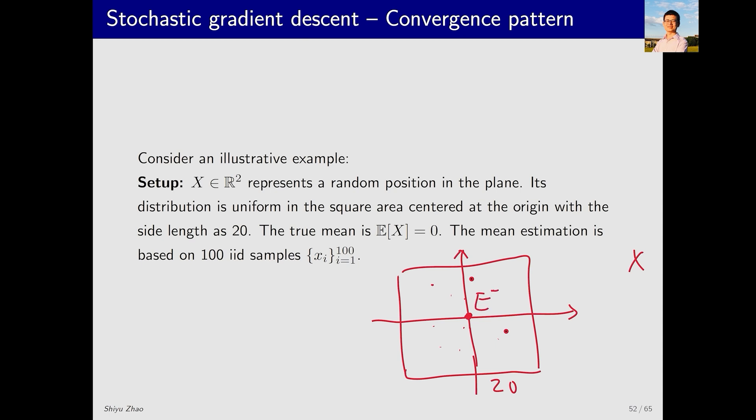The true expectation of these points E[x] should be 0. We now use these 100 points to run the mean estimation algorithm, which is w_{k+1} = w_k - α_k(w_k - x_k) and see what happens. Let's check the behavior of this algorithm during the convergence process.